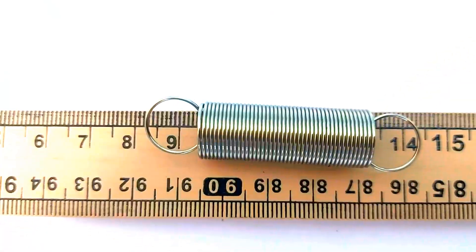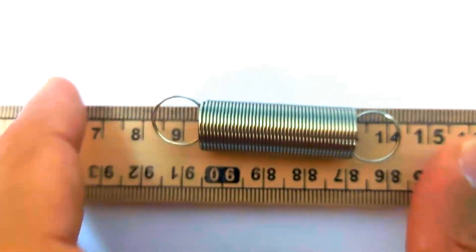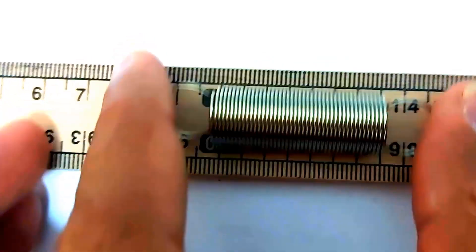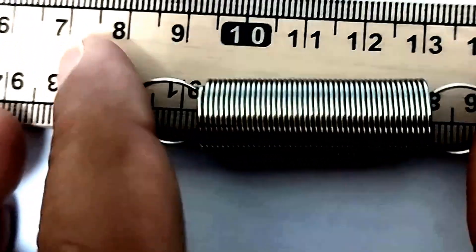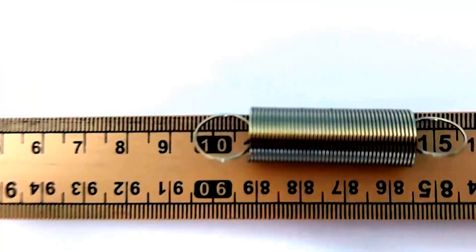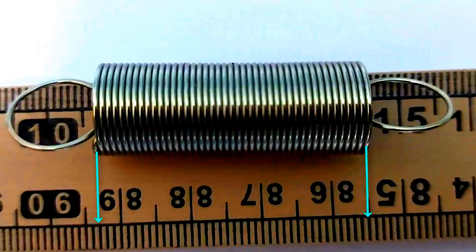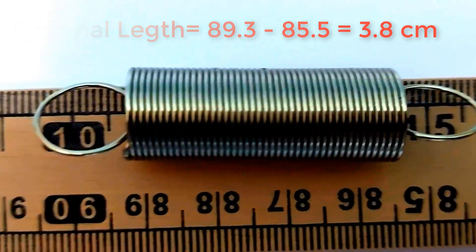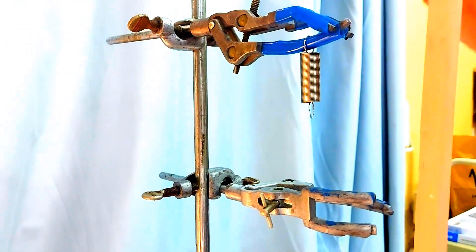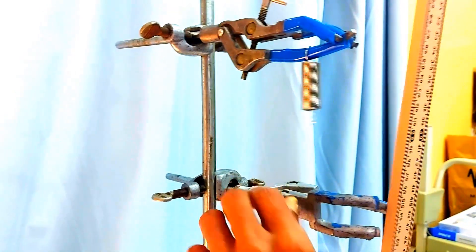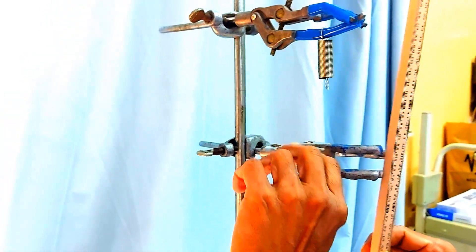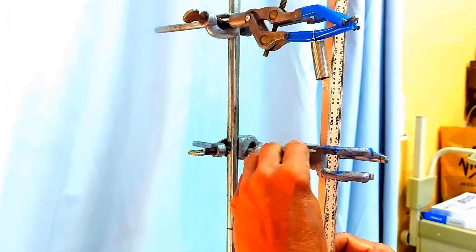Before we begin applying any force, it's crucial to get the original length of the spring. I'm using a meter ruler to measure it precisely, making sure I'm avoiding any errors that could mess with our results. The initial length is 3.8 centimeters. Remember, this is the starting point and every change will be measured from here.